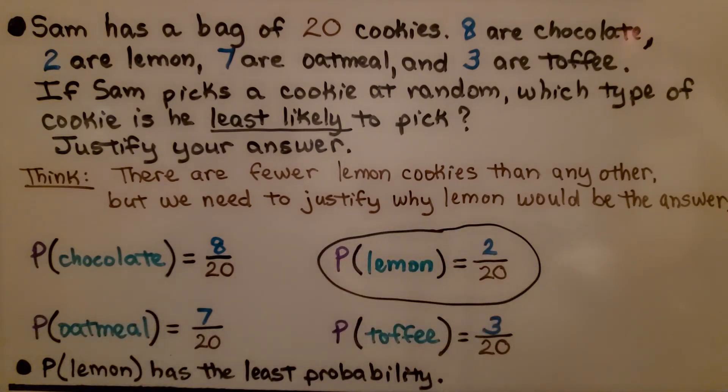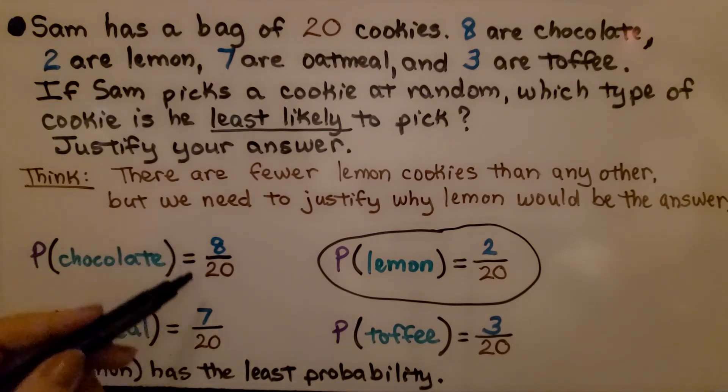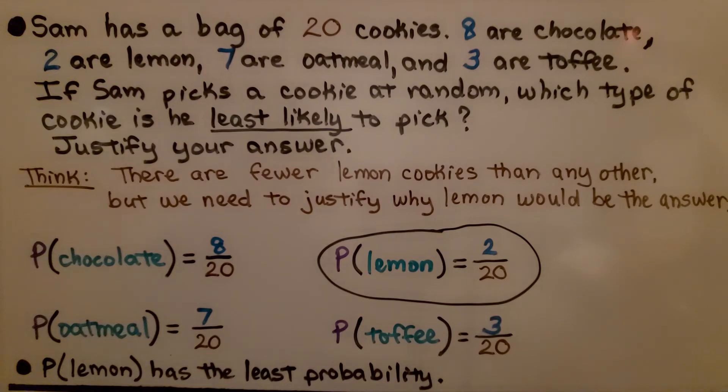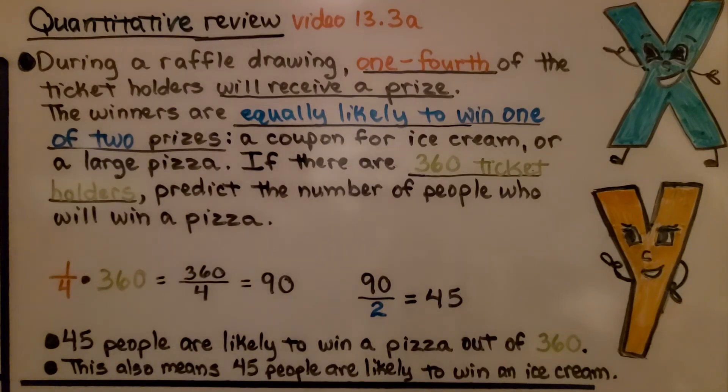That's the cookie he would be least likely to pick. And we can see chocolate would have the greatest probability, because that's eight out of twenty or eight-twentieths.